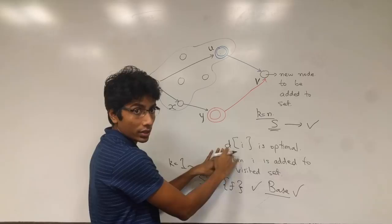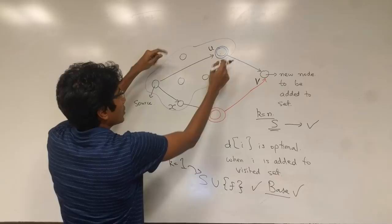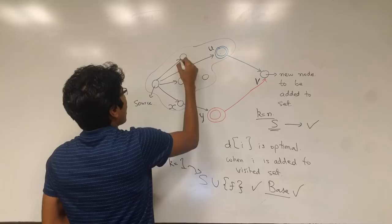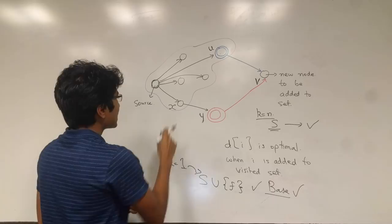So this is our set, the violet amoeba, and all the cities inside this have optimal distances from the source which is this node. We see that x and u are part of this visited set.